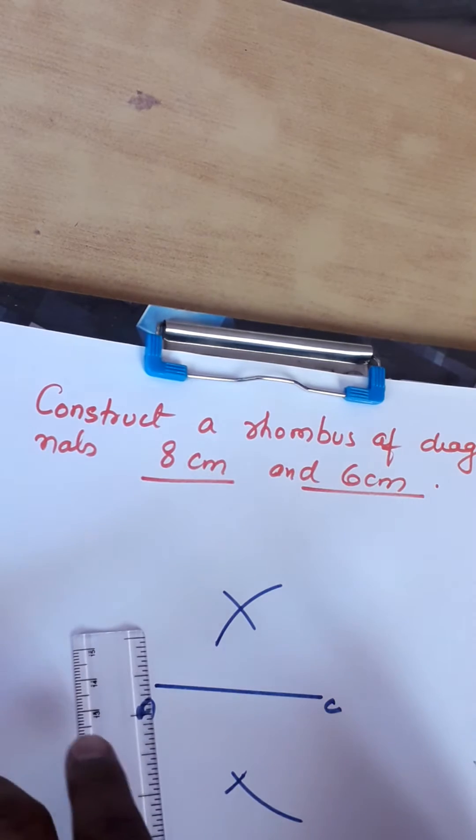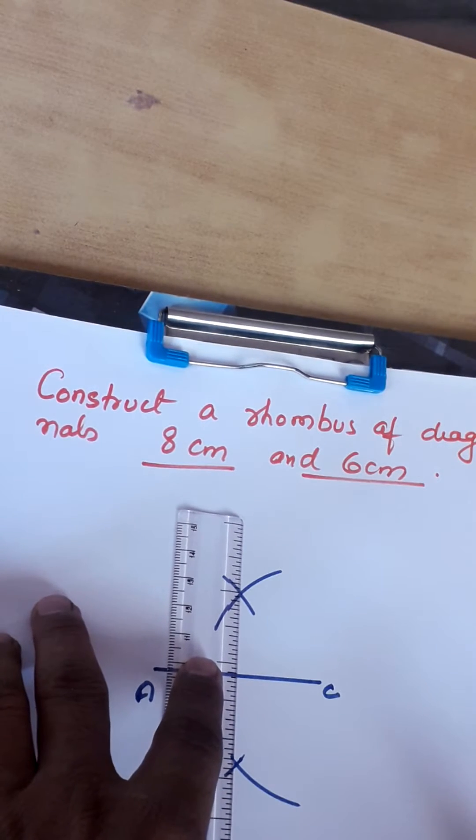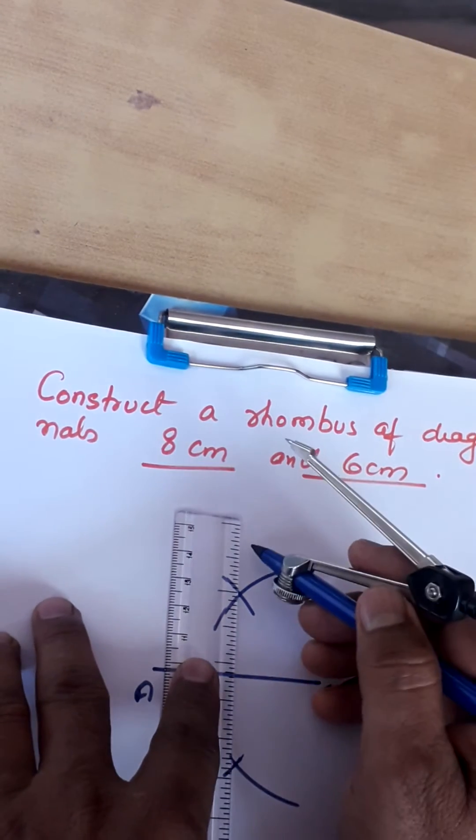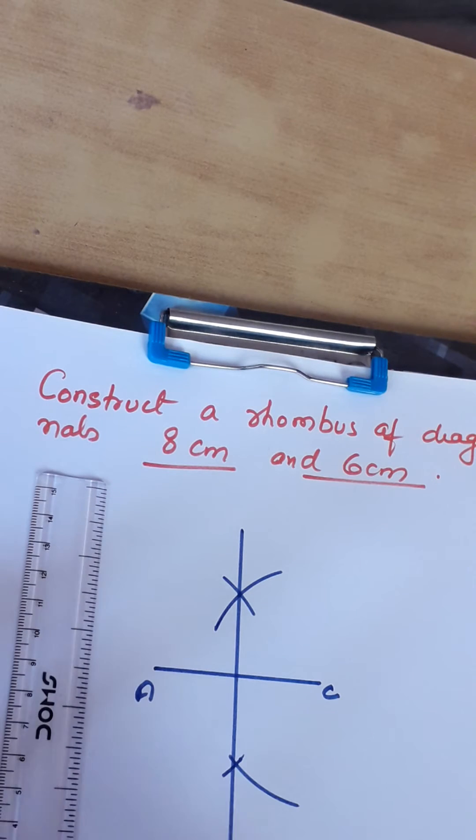Now we will join these two points where they intersect. This is the perpendicular bisector of AC.